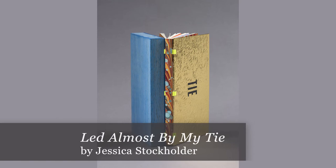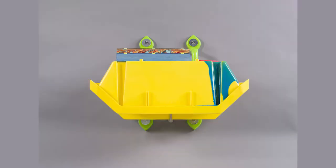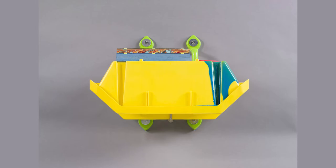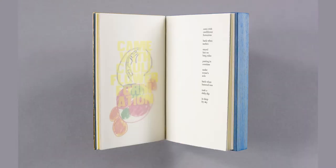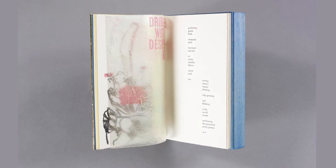This book is titled Led Almost By My Tie. It comes with a yellow plastic bucket-like object that can also be attached to a wall and used as a shelf to hold the book. Here are a few images from inside the book. The book includes a variety of materials and techniques, including poetry, artwork, a collection of different papers, and even pieces of plastic. What materials, pictures, or words would you want to include in your artist book?